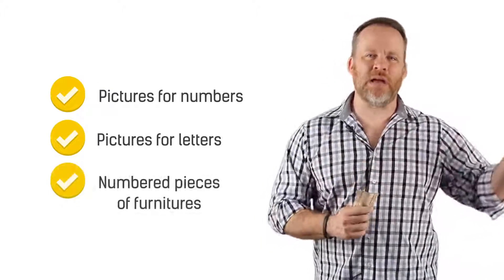So real quick recap. The first thing that I did is I created pictures for numbers. Then I created pictures for letters. And then I numbered pieces of furniture in my house. Then I went to Times Square.